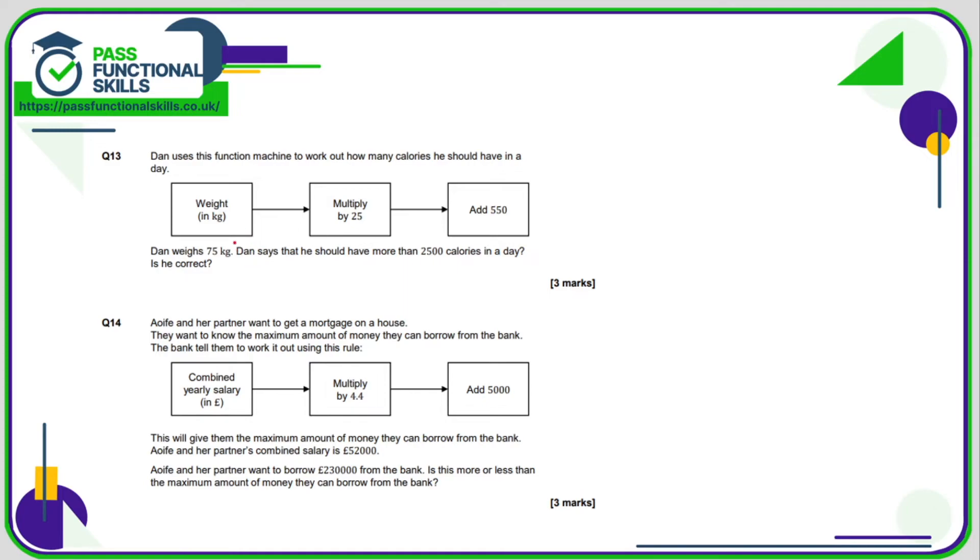Again, another function machine. We're going to do 75, the first thing we're going to do is multiply it by 25, and then once we've worked that out, we're going to add 550. 75 times 25 is 1875, plus the 550 comes to a total of 2425. So is Dan correct? Should he have more than 2,500? No, he should have 2,425, which is less. So the answer to that question is no.